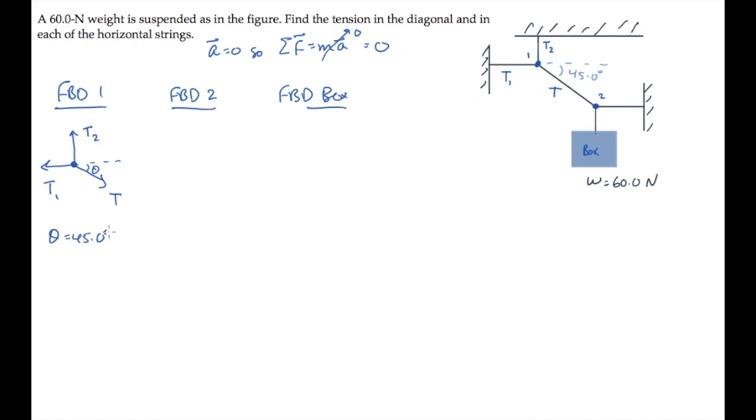Now for knot number two, we see again there are three tensions. This one I'll call T3, this horizontal one T4, and there's the same tension T in the diagonal string, with theta the same angle as before.